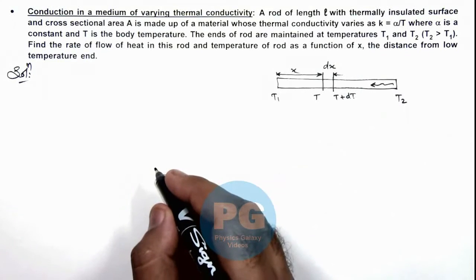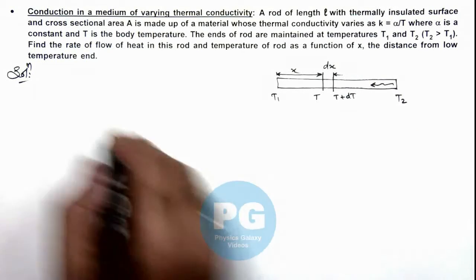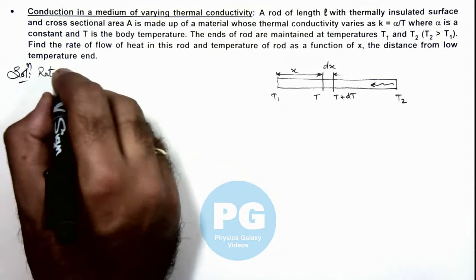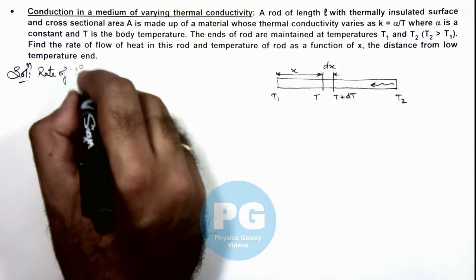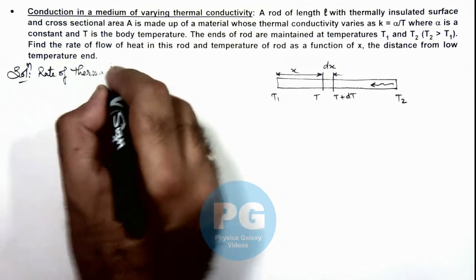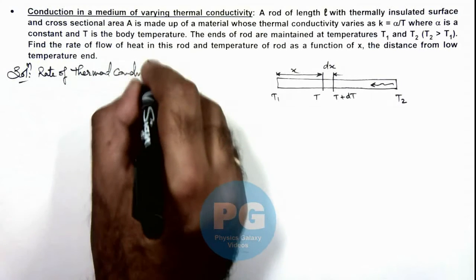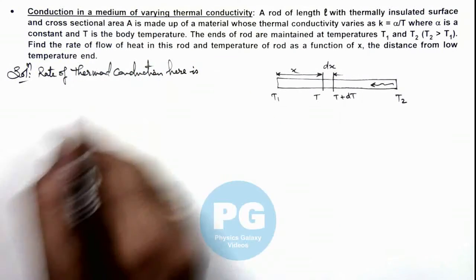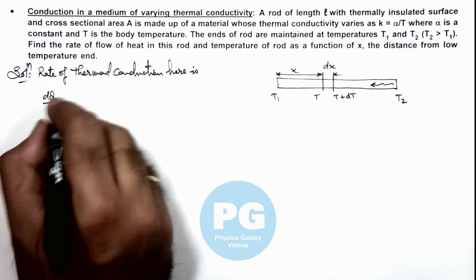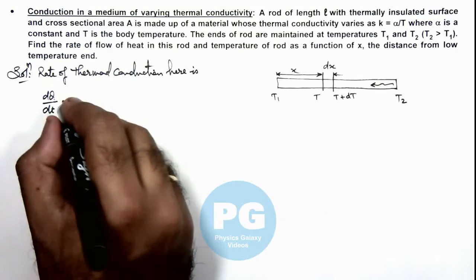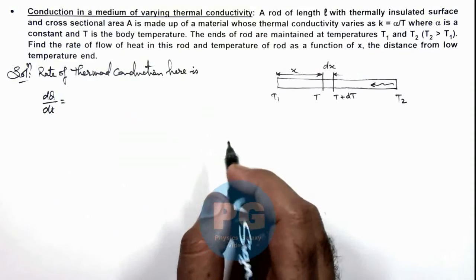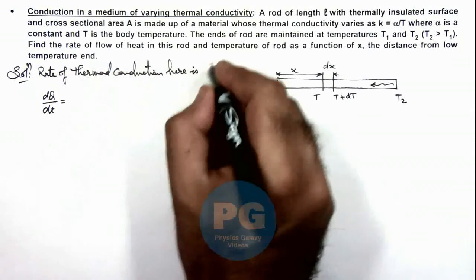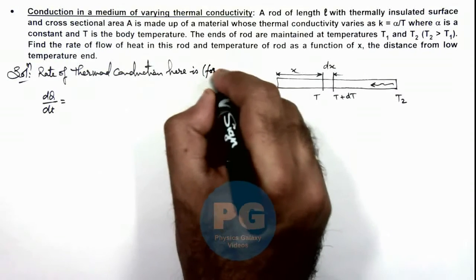So we can first calculate the rate of thermal conduction. This we can write as dQ/dt which remains constant. And for this element we can write, here we can also write rate of thermal conduction here is for element.